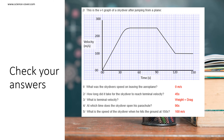Question 2: this is the velocity time graph of a skydiver after jumping out of a plane. What was the speed of the skydiver on leaving the airplane? This was zero meters per second. How long did it take the skydiver to reach terminal velocity? 45 seconds. What is terminal velocity? This is where weight is equal to drag. For which time does the skydiver open his parachute? This is at 90 seconds. What is the speed of the skydiver when he hits the ground at 150 seconds? That is 100 meters per second.